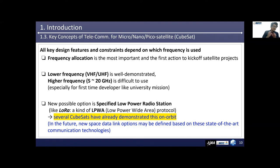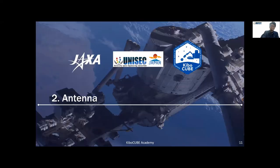Just as amateur radio satellites have been associated with the dawn of space communications, we also need constant effort to make communication methods faster and more convenient through CubeSat projects. My message is that I want all participants of CubeSat projects to embrace this ambition. Let's move on to Chapter 2, Antenna.